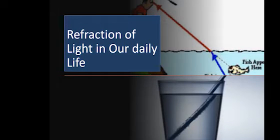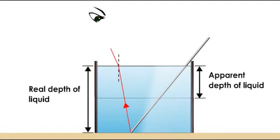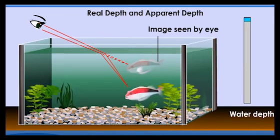Let's look at refraction of light in daily life. Why does a straight rod appear bent in a liquid? Due to refraction of light from the region below the liquid surface, a straight rod sticking out of a liquid appears bent. Similarly, the bottom of a container appears nearer to the surface, making the liquid appear shallower than it actually is. An object in water appears to be closer to the surface than its actual distance.